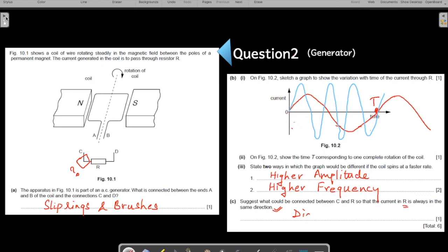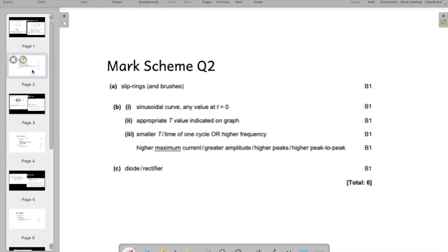let us study our answer as well. Diode. This answer was correct. Sinusoidal curve. T, I have shown you how it is marked. Higher maximum current means higher amplitude, greater amplitude and greater frequency. So far, all our answers are correct. Even the diode is a correct answer. So that is why I keep showing the mark scheme. You can take a snapshot of the mark scheme as well and tally your working yourself.